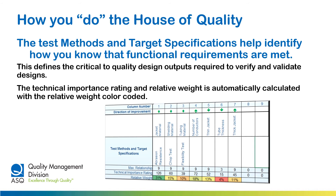Moving to the bottom of the matrix, the test methods and target specifications area helps you identify to what extent functional requirements are being met. These define the critical to quality design requirements that are needed to verify and validate designs. The tool automatically calculates the technical importance rating and the relative weights using relationships and customer rankings entered above. The relative weights for functional requirement columns are color-coded, with green being the highest weight and red being the lowest weight, so your resources may now be deployed intelligently.